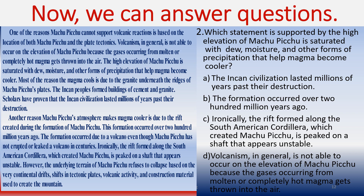You really have to read the sentences before the key statement. Choice A: 'The Incan civilization lasted millions of years past their destruction.' Looking at the passage, scholars have proven the Incan civilization lasted millions of years past their destruction — but the sentences before that deal with the Incan peoples forming buildings of cement and granite. That does not lead back to dew, moisture, and other forms of precipitation. So choice A doesn't hold up well.